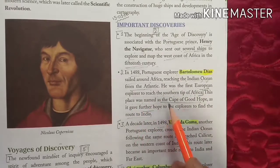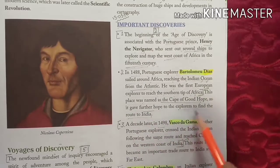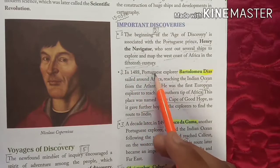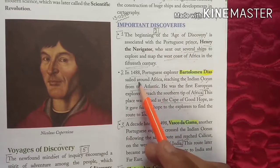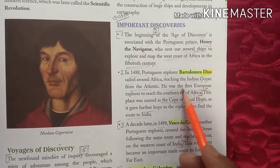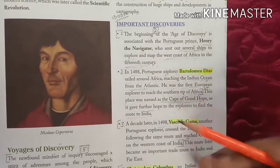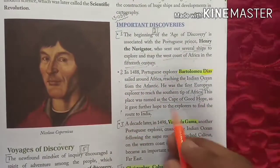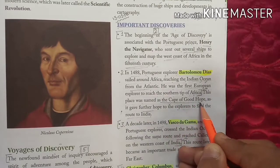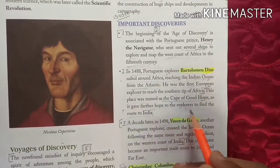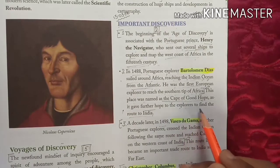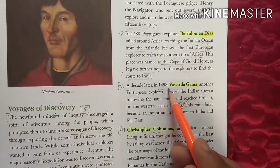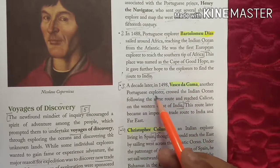This place was named the Cape of Good Hope, as it gave further hope to the explorers to find the route to India. Vasco da Gama, another Portuguese explorer, crossed the Indian Ocean following the same route and reached Calicut on the western coast of India.